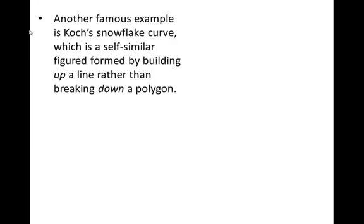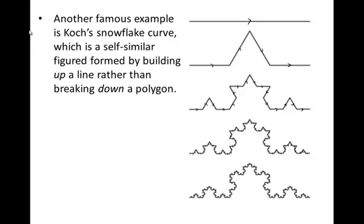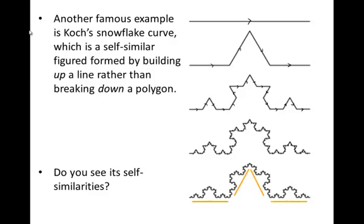Another famous example is the Koch Snowflake curve, which is a self-similar figure formed by building up a line rather than breaking down a solid polygon. Its initiator is a straight line, and its generator is a zigzag line — it goes over, up, down, across. Since this generator has four copies of the initiator, we replace each one of those four copies with the zigzag shape. Now I've got sixteen little copies of the initiator, so I stick sixteen more copies of the generator, and again. If I keep repeating this, I get the Koch Snowflake curve. Can you see the similarity? Here are four small subdivisions that look like the entire thing — we are getting self-similar figures.